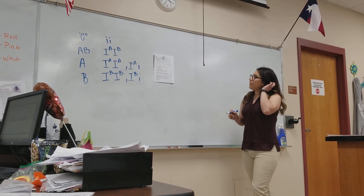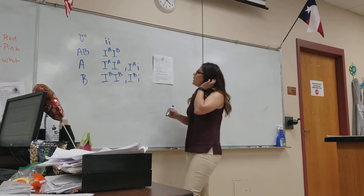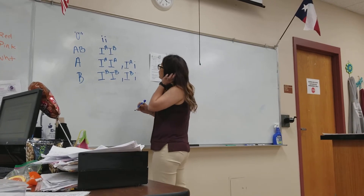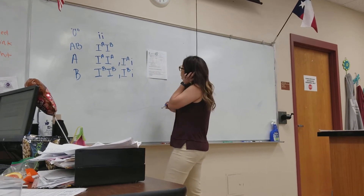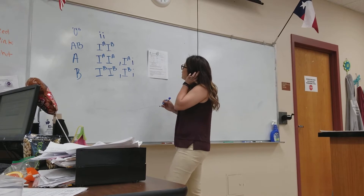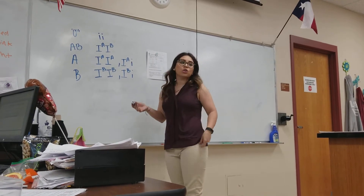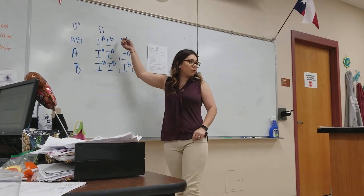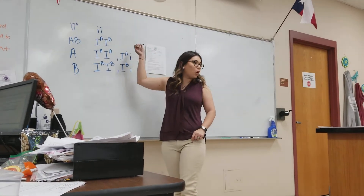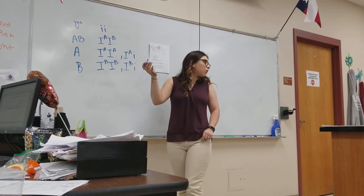Because of this, type O blood is your universal donor, and type AB is your universal receiver, because they can receive blood from essentially anything — they can receive A, they can receive B, and they can receive O, because everyone can receive O.